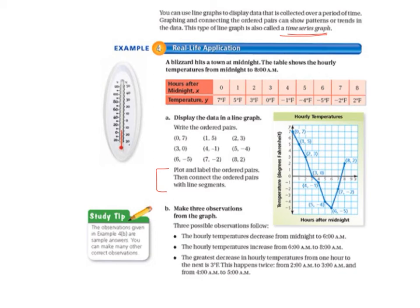Letter B, make three observations from the graph. Three possible observations follow. The hourly temperatures decrease from midnight to 6 a.m. So you can see that they decrease because the slope of the graph is going down. The hourly temperatures increase from 6 to 8 a.m. because the slope is going up. And the greatest decrease in hourly temperatures from one hour to the next is 3 degrees Fahrenheit. This happens twice, from 2 a.m. to 3 a.m., and from 4 a.m. to 5 a.m. So you can see that in these two spots on the graph, from 2 to 3 and from 4 to 5, and you can see how steep the graph is in those two spots.